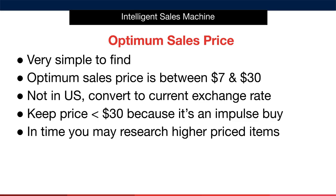The price we want our items to sell for is between $7 and $30. If you're not in the US, you can simply exchange this over to the currency relating to the Amazon marketplace you're researching in. Just convert the dollar amounts to the currency using the currency exchange rate — I recommend using xe.com for this. The reason we keep our items under $30 when starting out is because we want our item to be an impulse purchase for a customer, and we certainly don't want them to have to think about it too much.